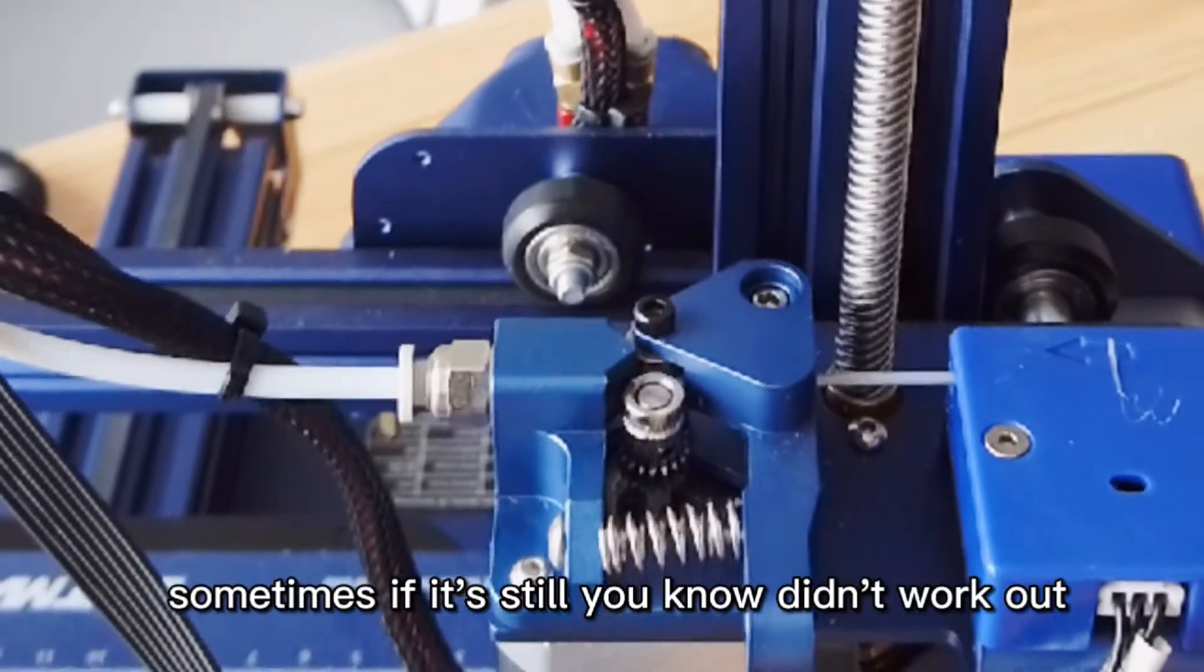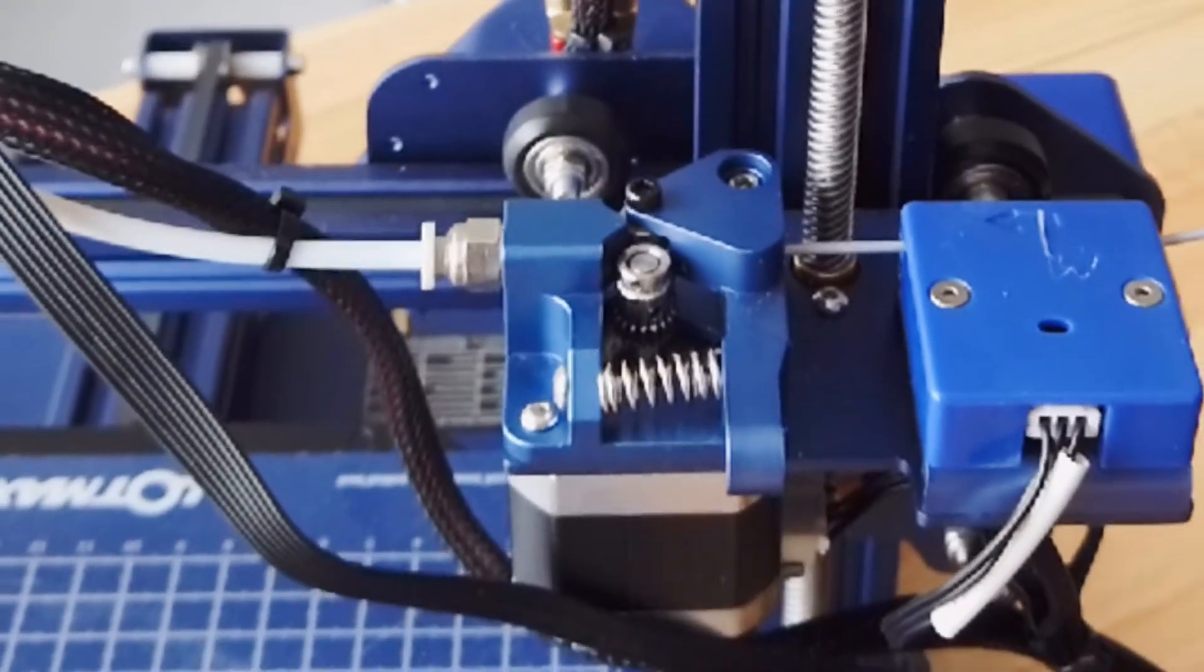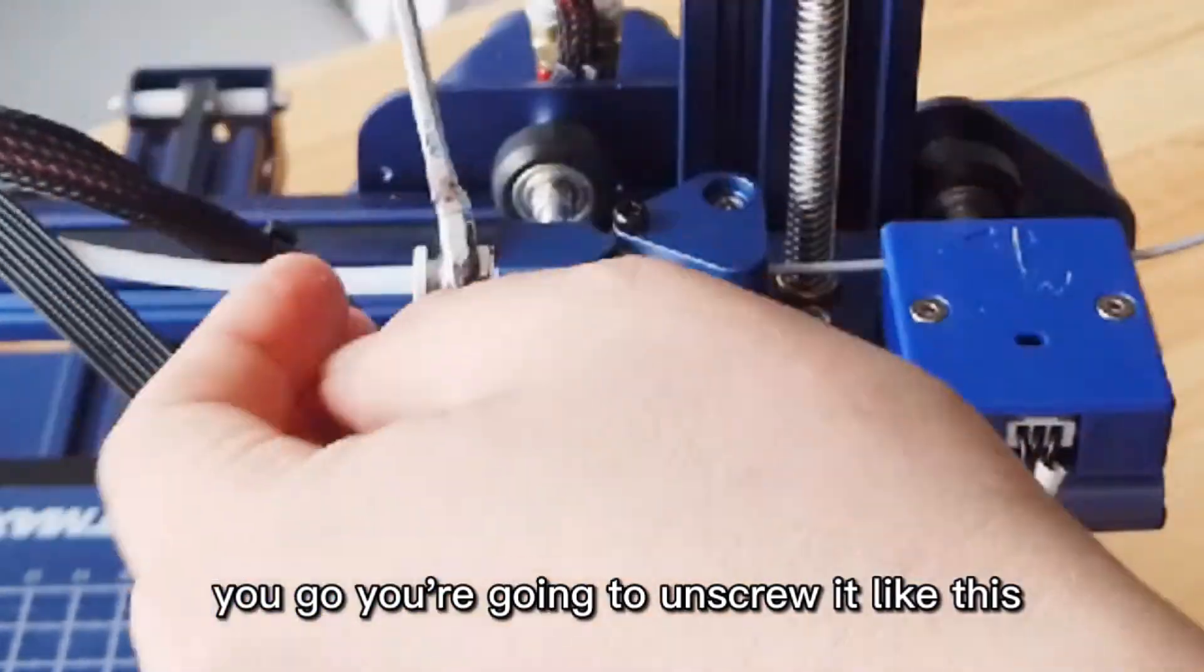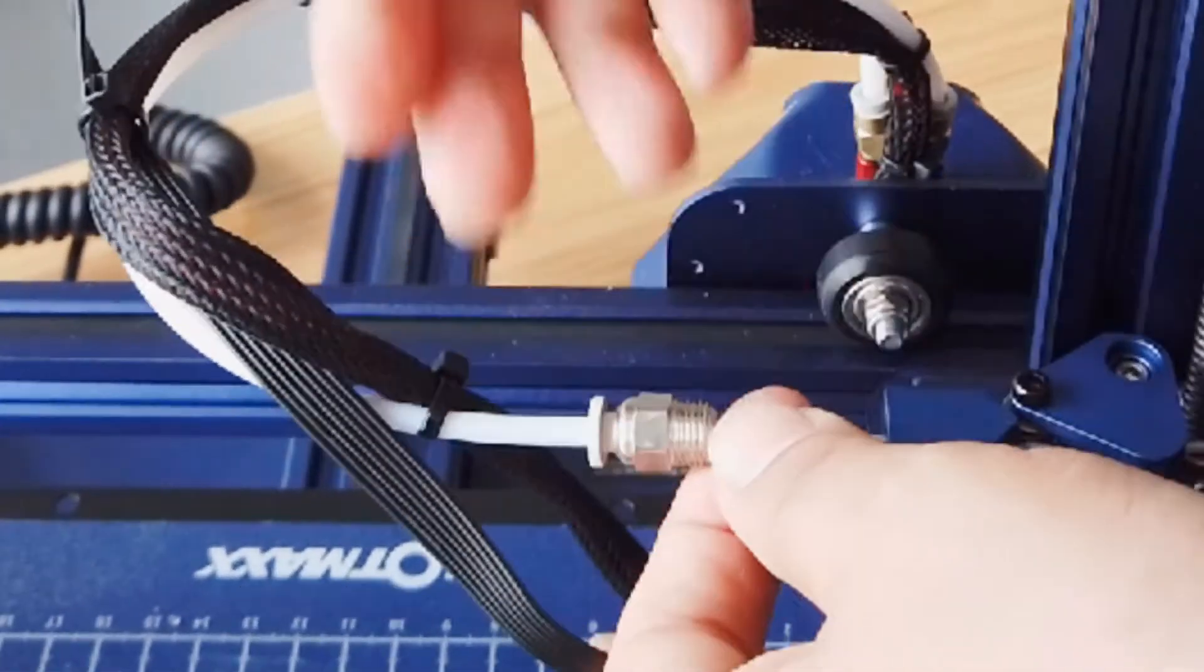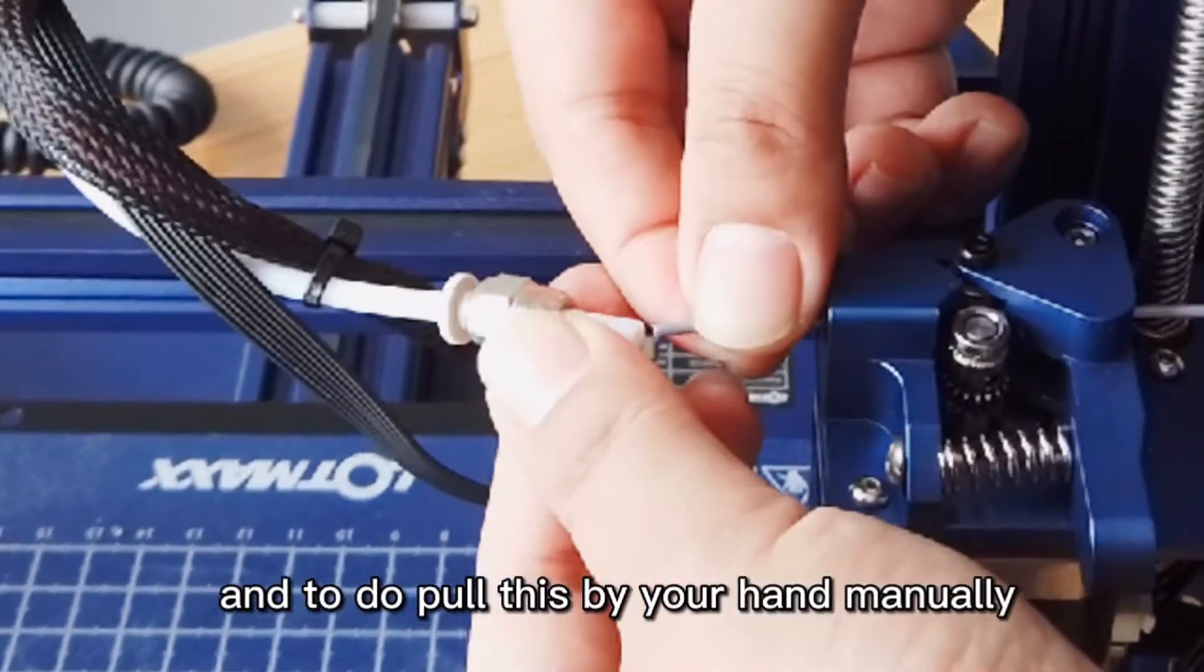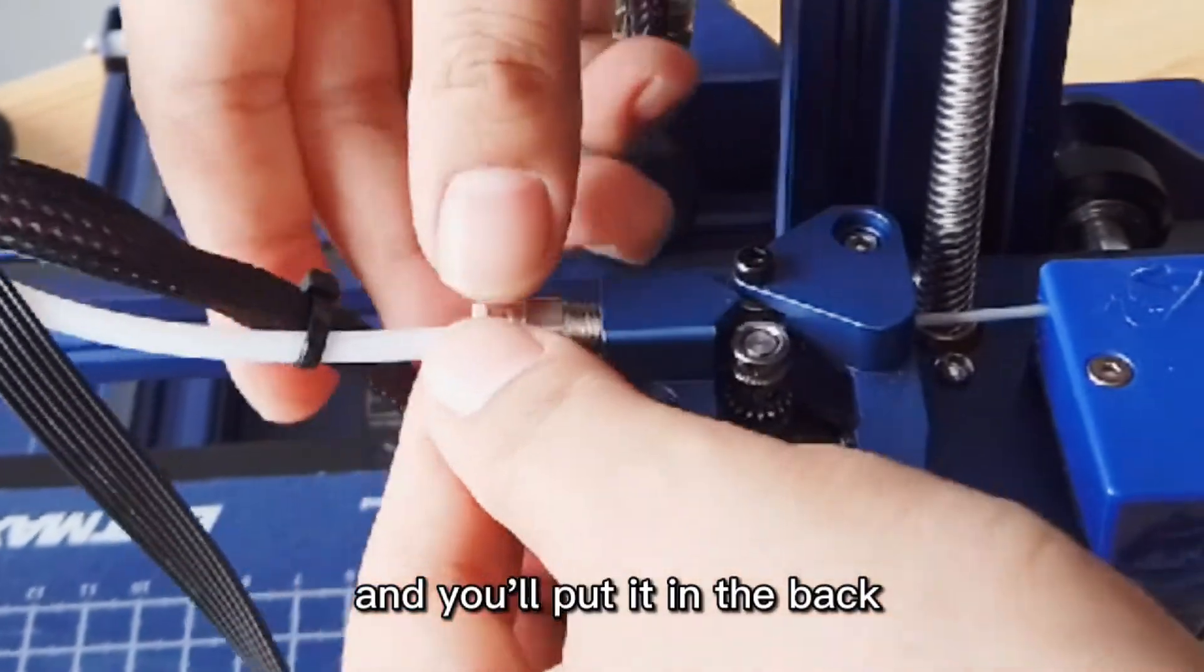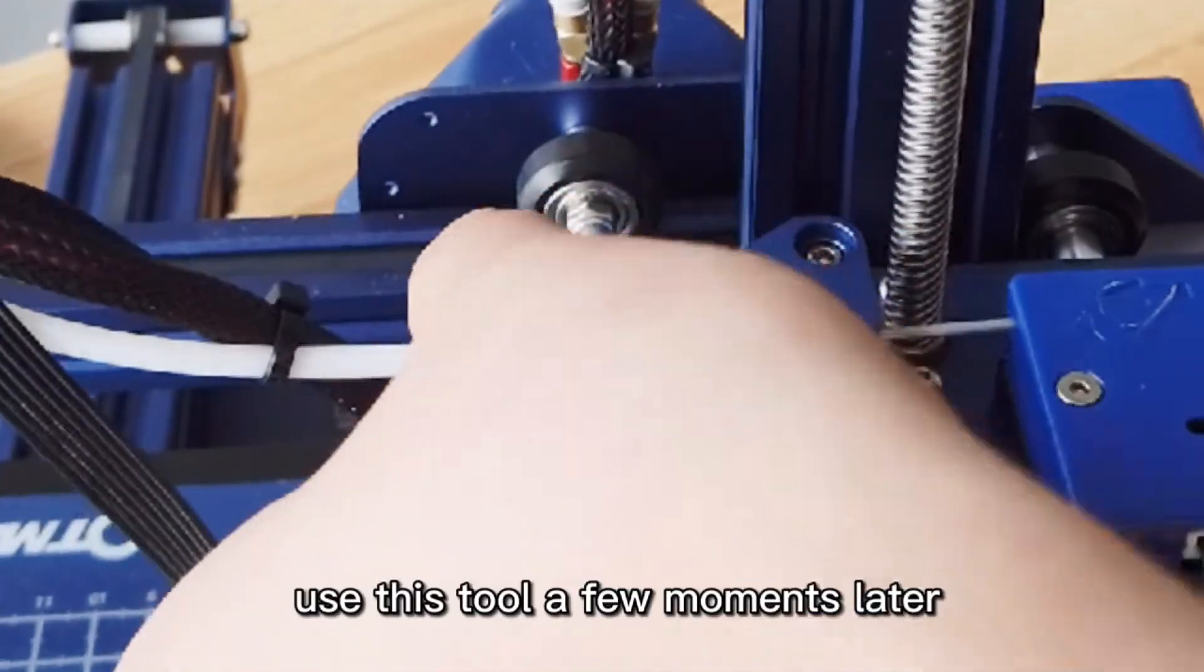And sometimes if it still didn't work out, you got to use a tool like this one with me right now. You're going to unscrew it like this. A few moments later, then I pull it out. So you pull this part out. For example, if it is stuck here, I put it through and you put it by your hand manually. And you put it back and you screw it again using this tool.